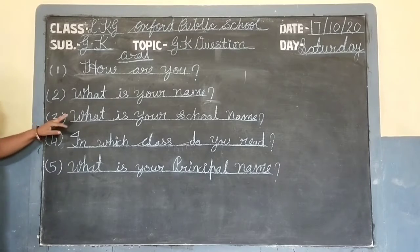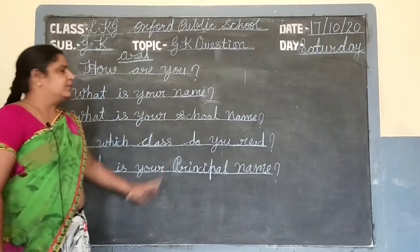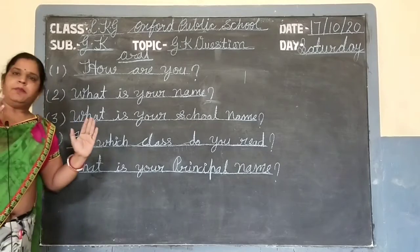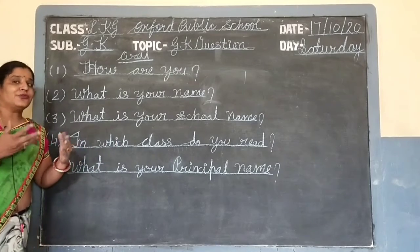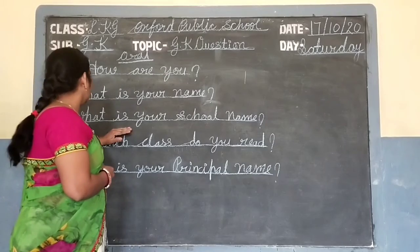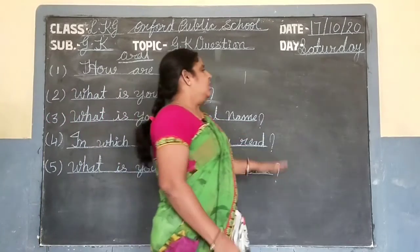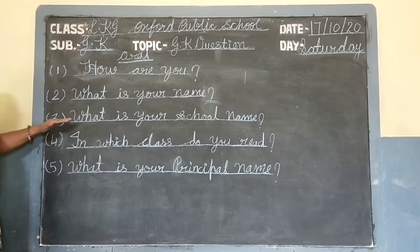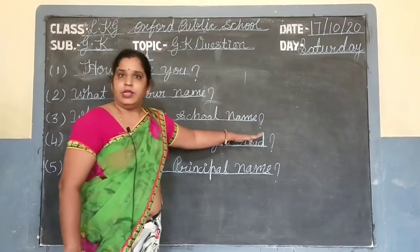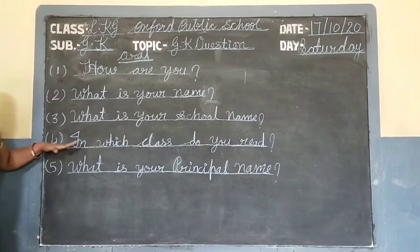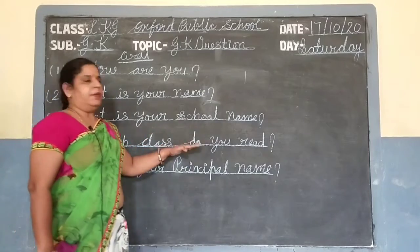Third question is: What is your school name? My school name is Oxford Public School. What is your school name? — then you put your school name: My school name is Oxford Public School.